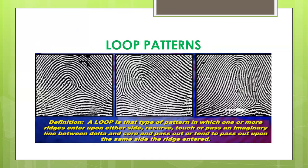To shorten the definition of a loop: it is a type of pattern in which one or more ridges enter upon either side, recurve, touch, or pass an imaginary line between the delta and core, and pass out or tend to pass out upon the same side of the ridge — meaning it recurves back from where it started. These patterns here are examples of a loop pattern.